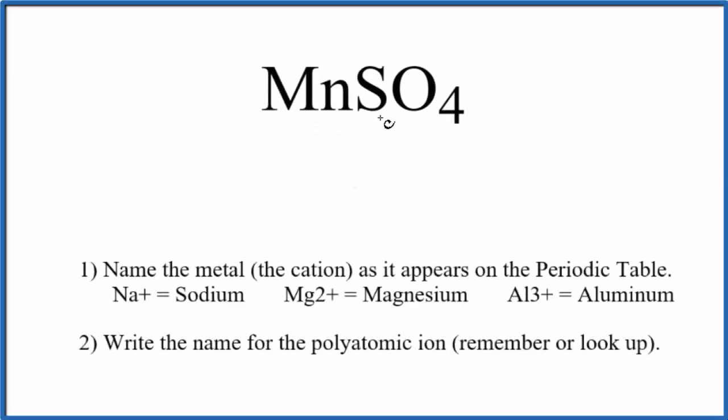To write the name for MnSO4, the first thing we need to realize is we have this SO4 here. This is called the sulfate ion. It's a polyatomic ion.